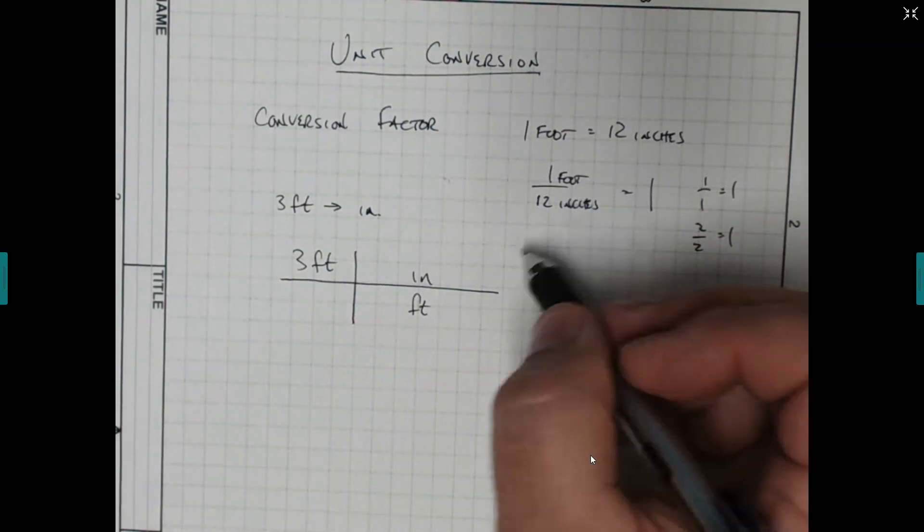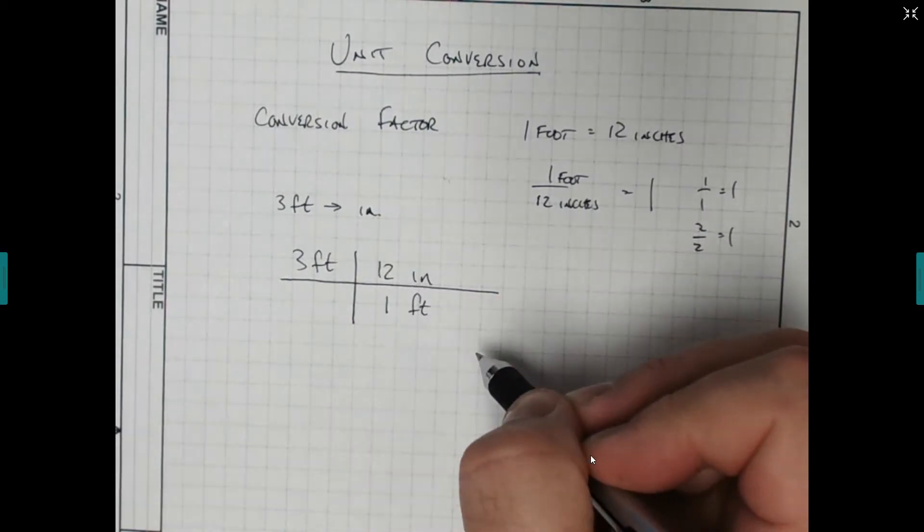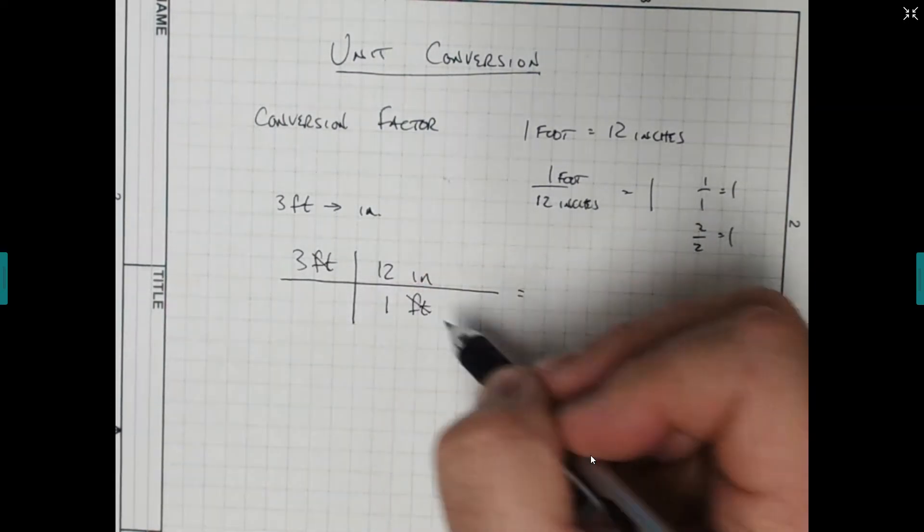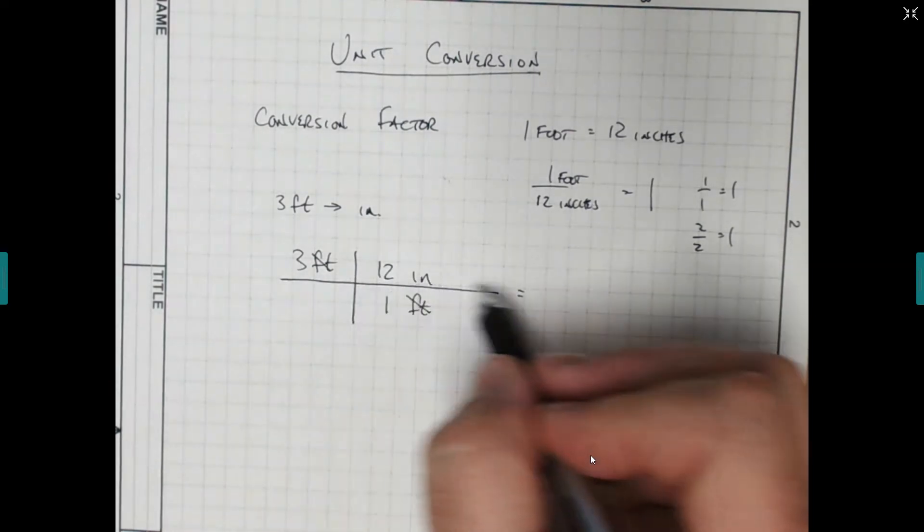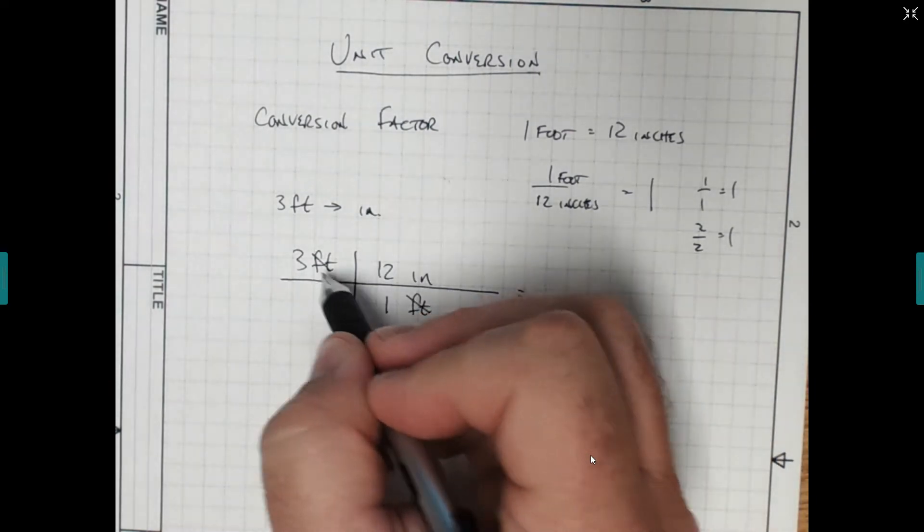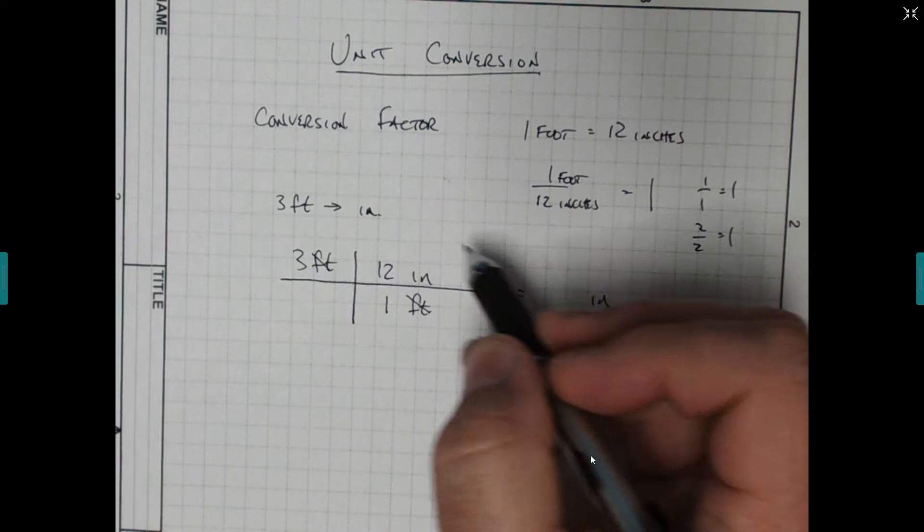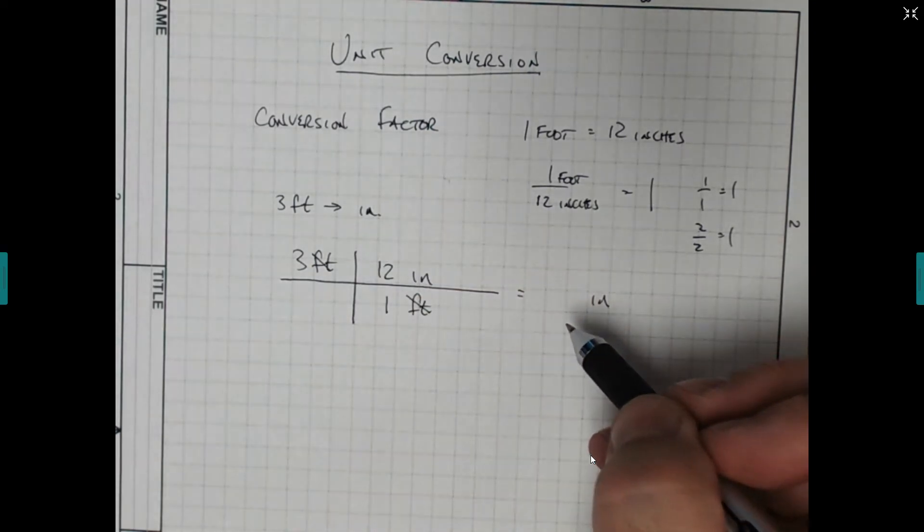because those are the two things we have. And then you just write in the numbers. There were 12 and 1. And now you can solve. You can see the feet cancel off, and we multiply through. So always check your units first. The feet canceled off, and we end up in inches, which is what we wanted. So we must have set it up correctly.